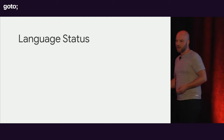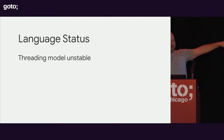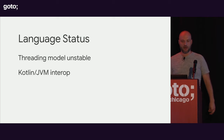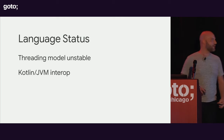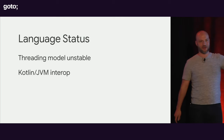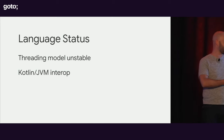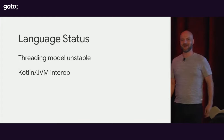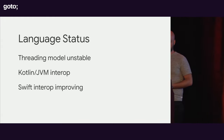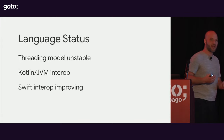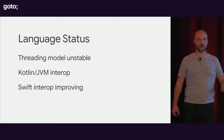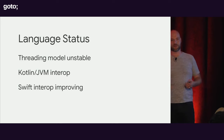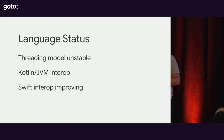The threading model I would consider unstable because there's still active work going on with it. The Kotlin JVM interop story is fantastic — Kotlin Multiplatform to Kotlin JVM is really easy; it's Kotlin all the way down. The Swift interop story is rapidly improving and pretty good, but there are some notable exceptions like generics, which is something being worked on right now.